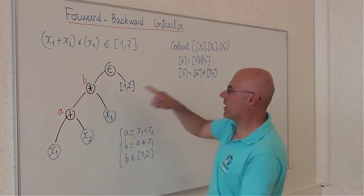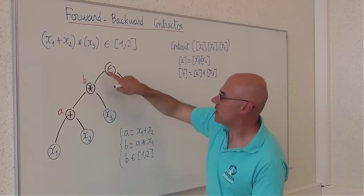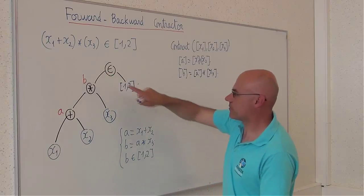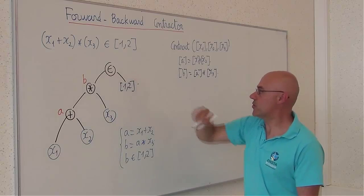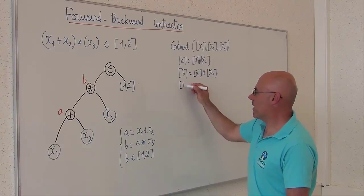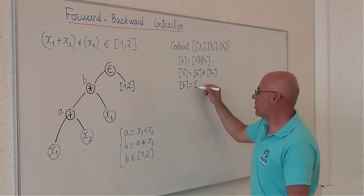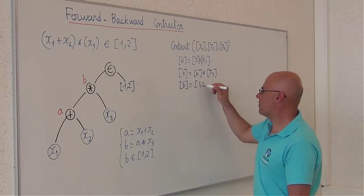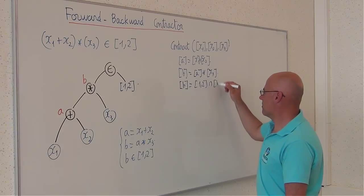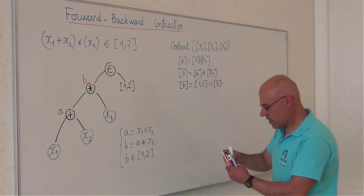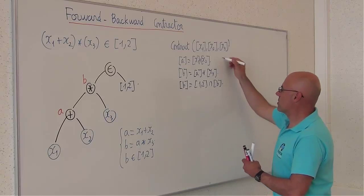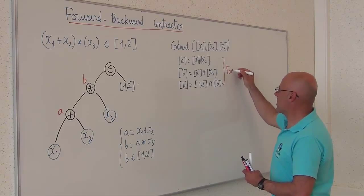And then, I will reach the root. And I will write b equal to [1,2] intersected with b. This corresponds to the forward step.